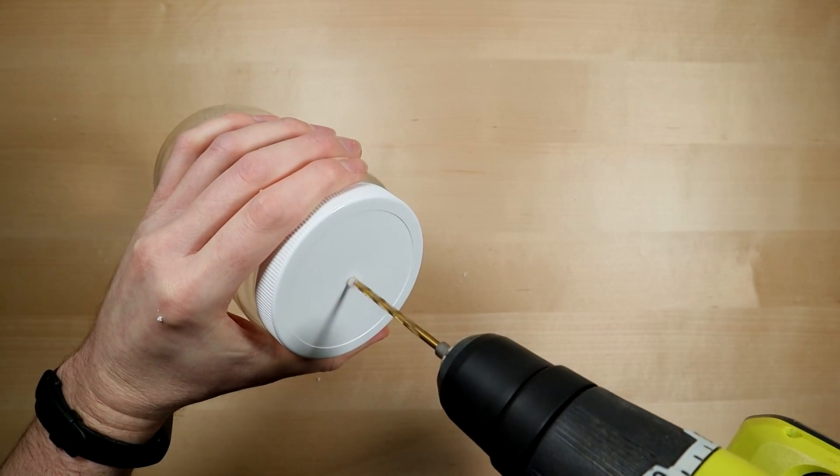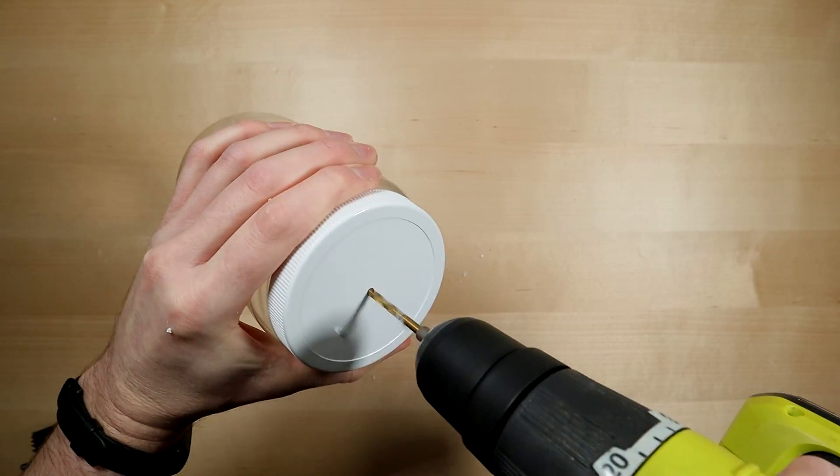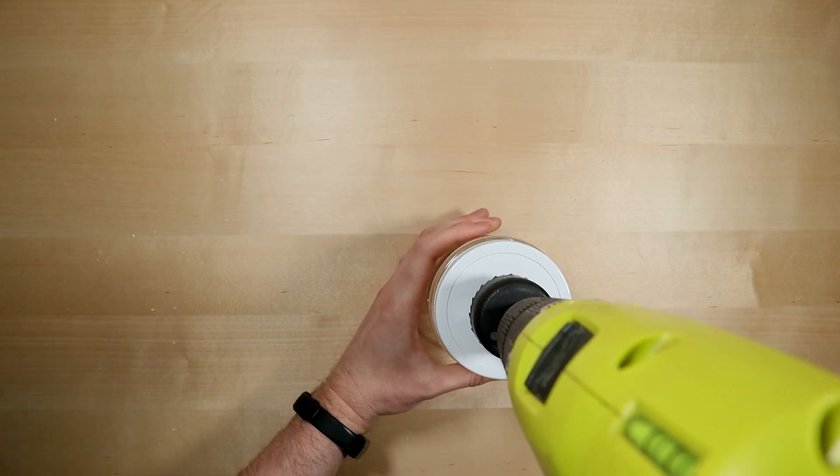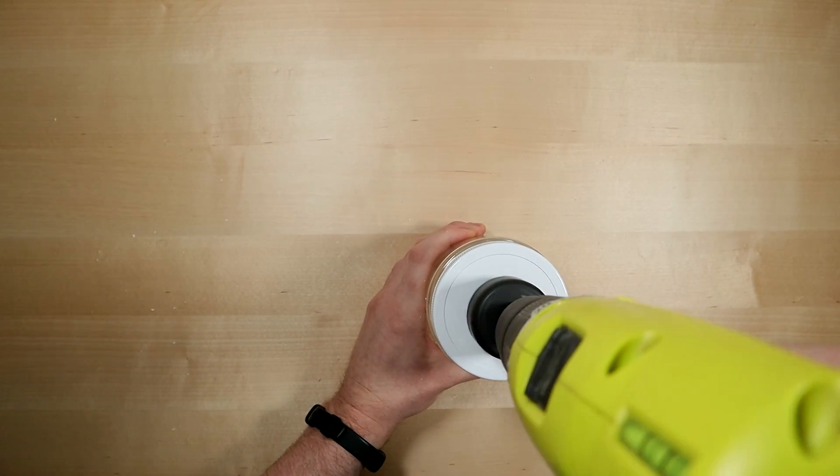If you do this, I would like you to be at least 30-40% safer than I am when using tools. Please. Next I'll switch to the hole saw, and slowly, carefully, cut a 2 inch hole in the center of the lid.